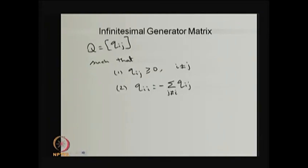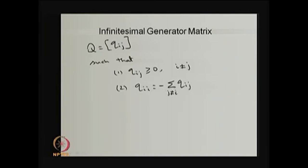Using these properties, we construct the Q matrix with entries Qij such that Qij >= 0 for i not equal to j, and the diagonal element is the negative of the sum of all other row elements, so the row sum equals 0. This differs from the one-step transition probability matrix in DTMC, where entries are probabilities between 0 and 1 and row sums equal 1. Here, the Qij values are obtained by differentiating Pij, so they are rates.